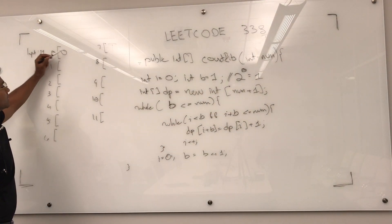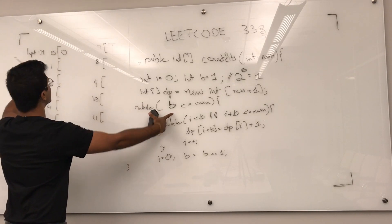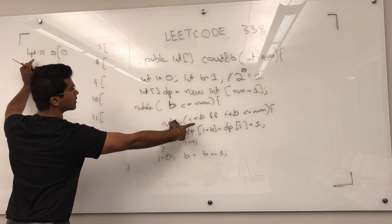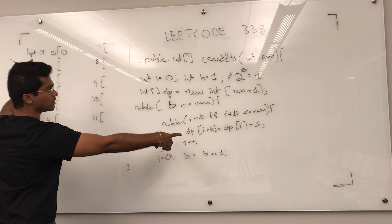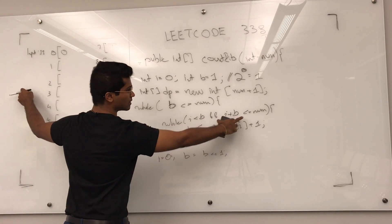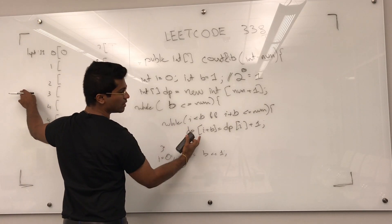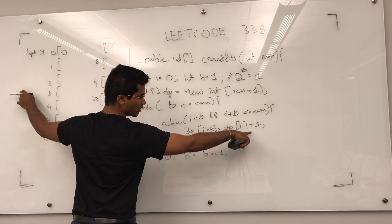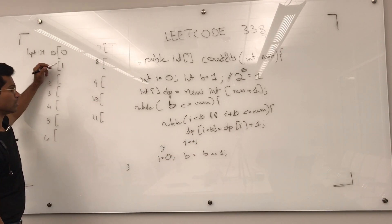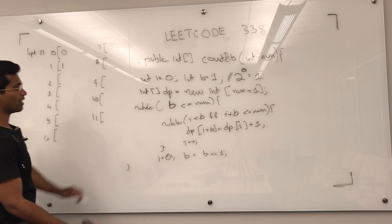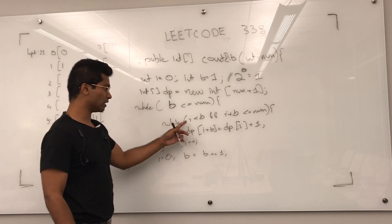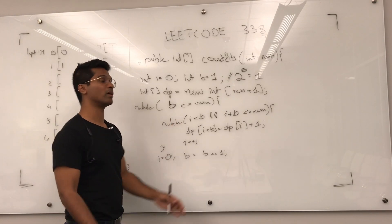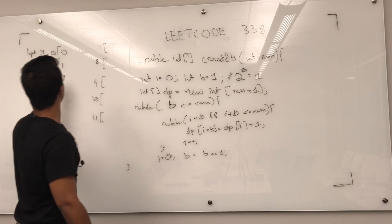While 1 is less than or equal to 11, we enter the loop. i is 0: 0 is less than 1 and 0 plus 1 is less than 11, so dp of i plus b — which is dp[1] — is going to be set to dp[0] plus 1, so dp[1] gets the value 1. Then i is incremented to 1; 1 is not less than 1, so we exit this inner while loop. i is set back to 0 and b is increased to the next power of 2.